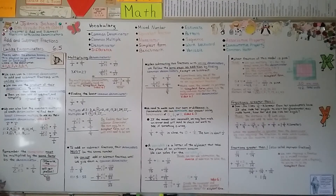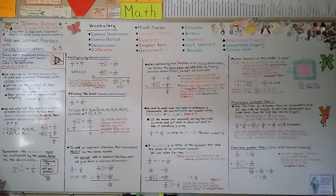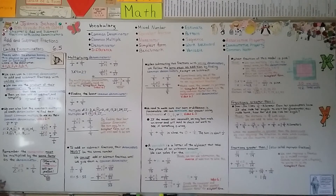Make sure you are multiplying the numerator and denominator by a factor that will give you the common denominator. In our next lesson, 6.6, we're going to add and subtract mixed numbers with unlike denominators.